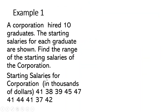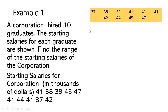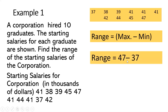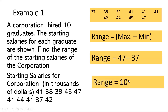Example number one: a corporation hired 10 graduates; the starting salaries for each graduate are shown in thousands of dollars. Find the range of the starting salaries. The first thing we need to do is arrange this in ascending order. The maximum data entry is 47 and the minimum data entry is 37. So that is 47 minus 37 — the range is 10, meaning the range of the salaries is $10,000.